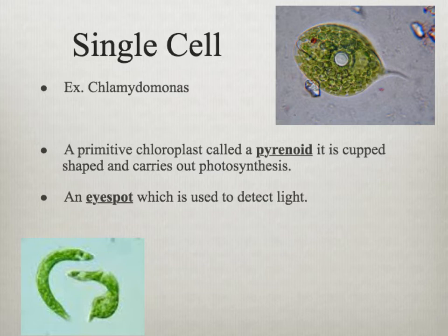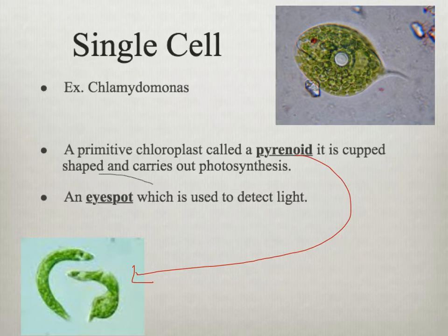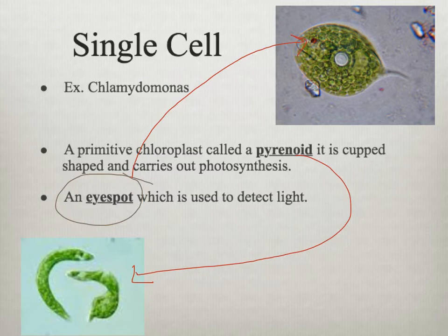Chlamydomonas is a single-cell organism, and you can see by the green color that it undergoes photosynthesis — so it's an autotroph. I have a picture of the pyrenoid here, which is a cup-shaped organelle that carries out photosynthesis. We also have an eye spot — you can see the red dot — which is used to help detect light. Individuals that are able to detect light would be more successful than those that did not have that capability.